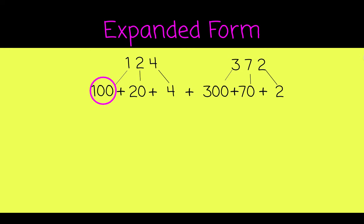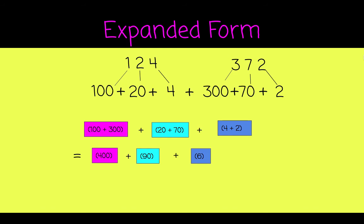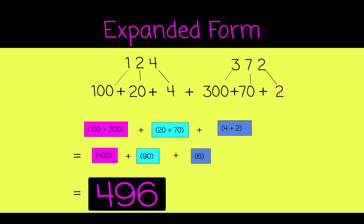Let's add 100 plus 300. Then our tens, 20 plus 70. Then our ones, 4 plus 2. Which gives us 400 plus 90 plus 6 for a final sum of 496.